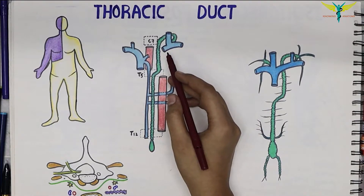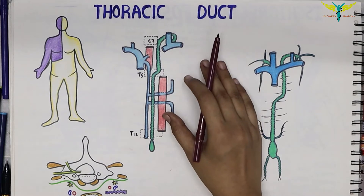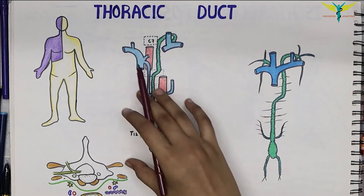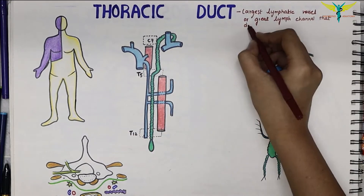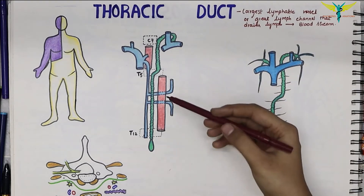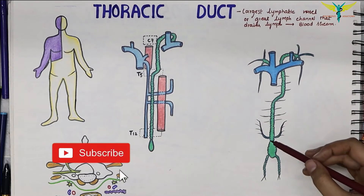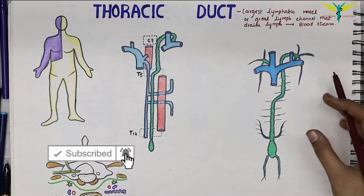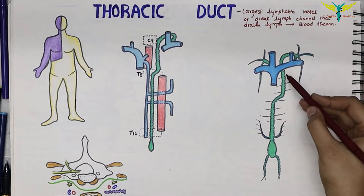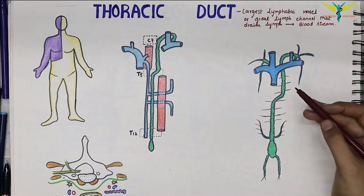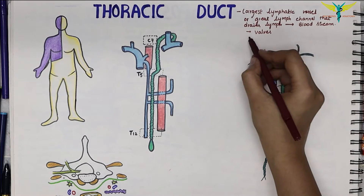In this video, let's learn about the thoracic duct. The thoracic duct is the largest lymphatic vessel that drains lymph from most of the body into the bloodstream. The lymph in the thoracic duct is milky white in appearance because it contains a product of fat digestion called chyle from the intestine. The thoracic duct appears beaded due to the presence of numerous valves in its lumen.